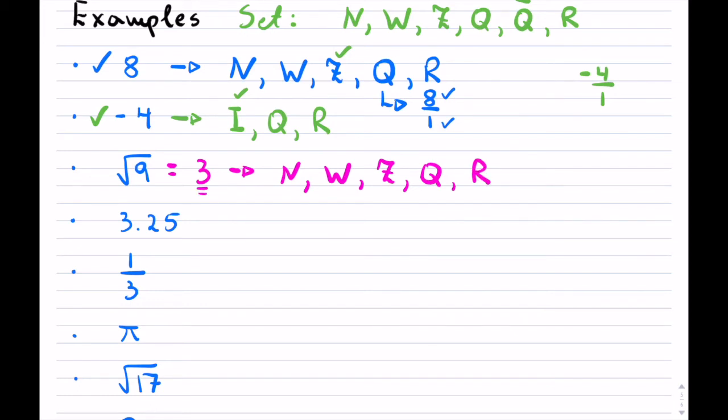Now, if you only look at just the square root of 9, sometimes people will think that this is just an irrational number. It's not, because it's a perfect square.